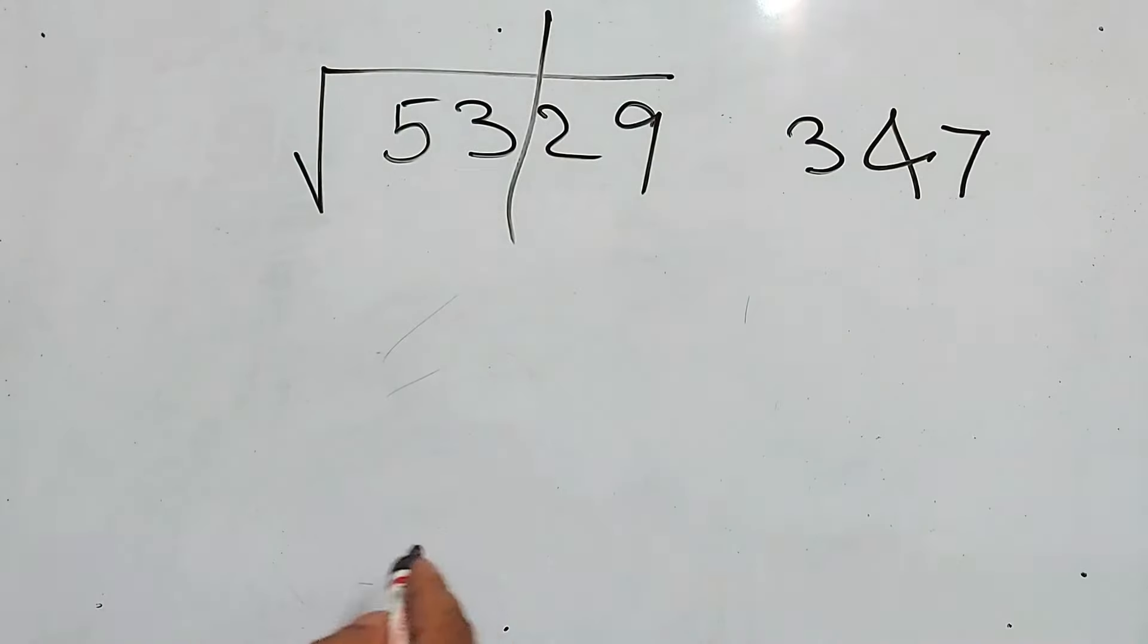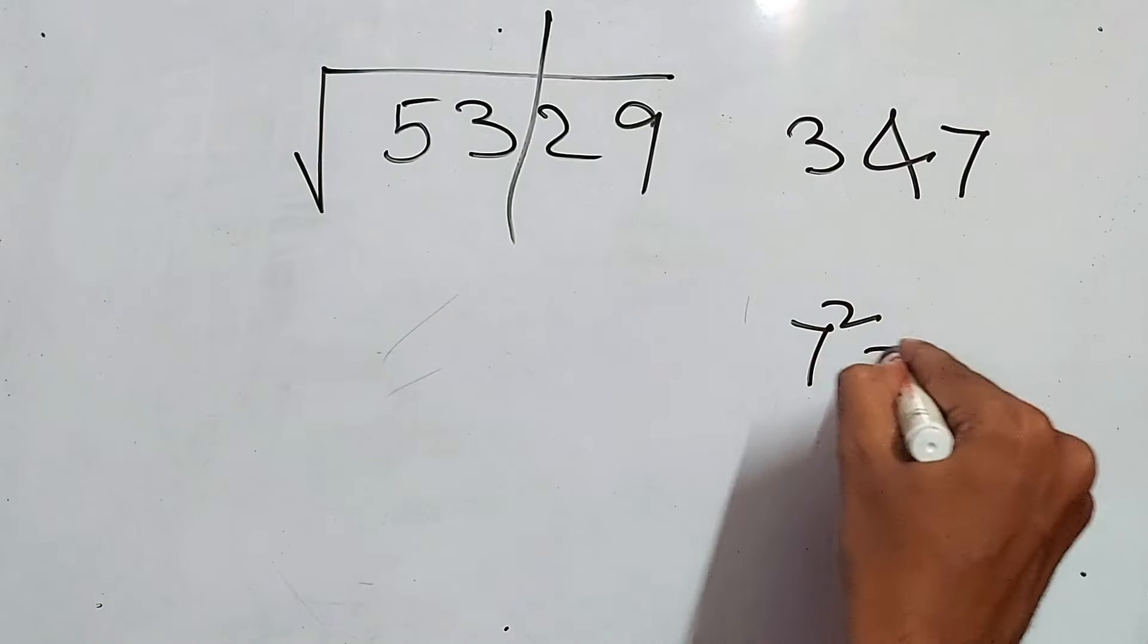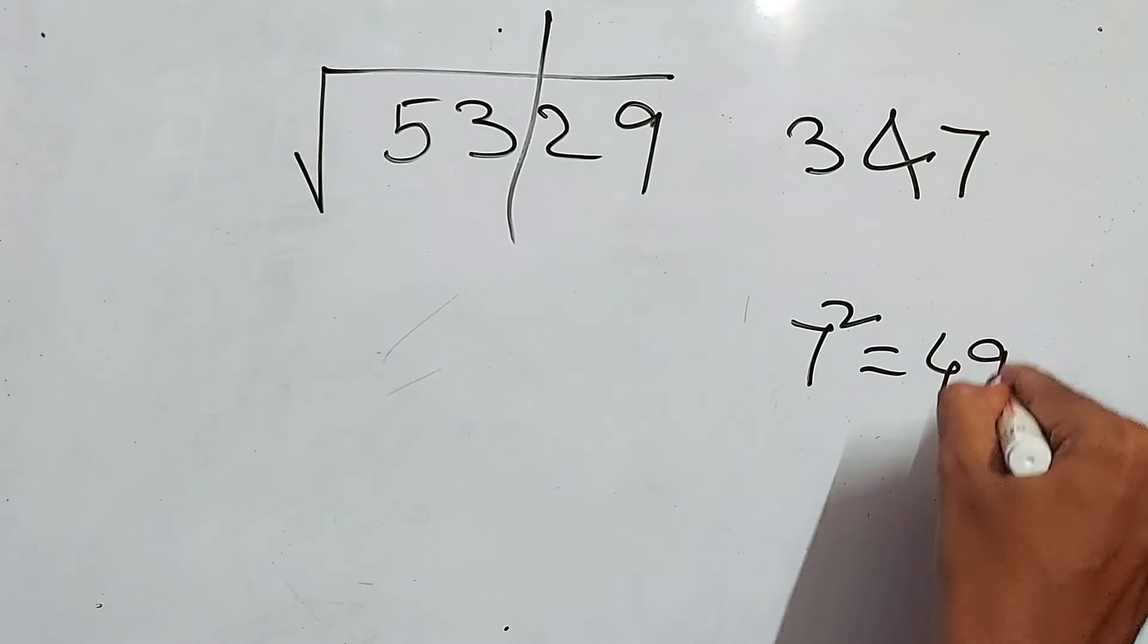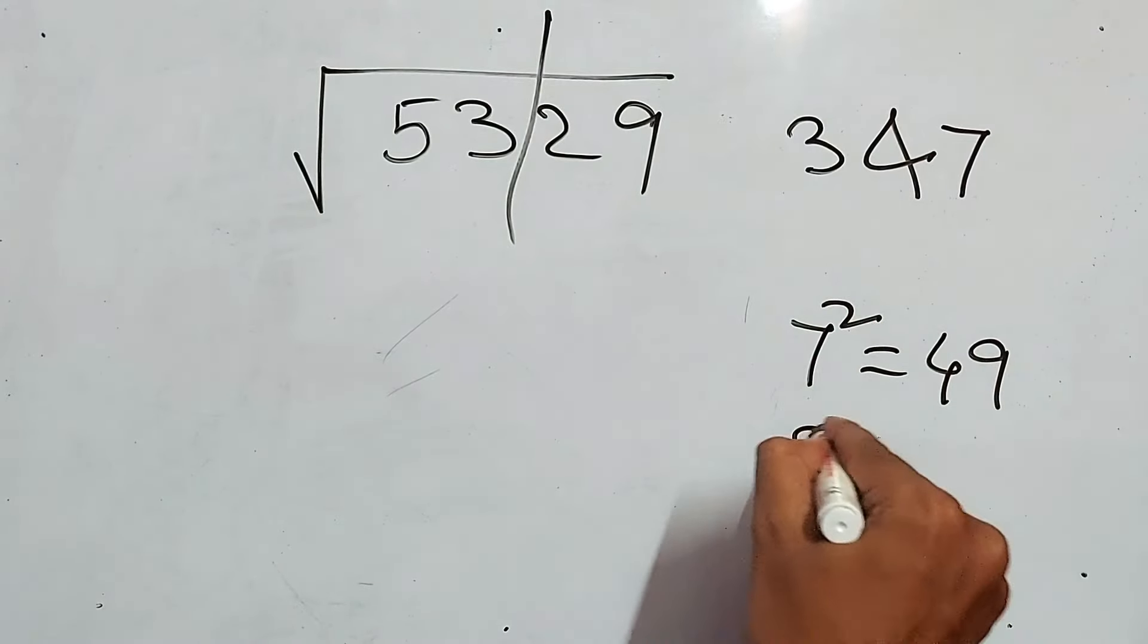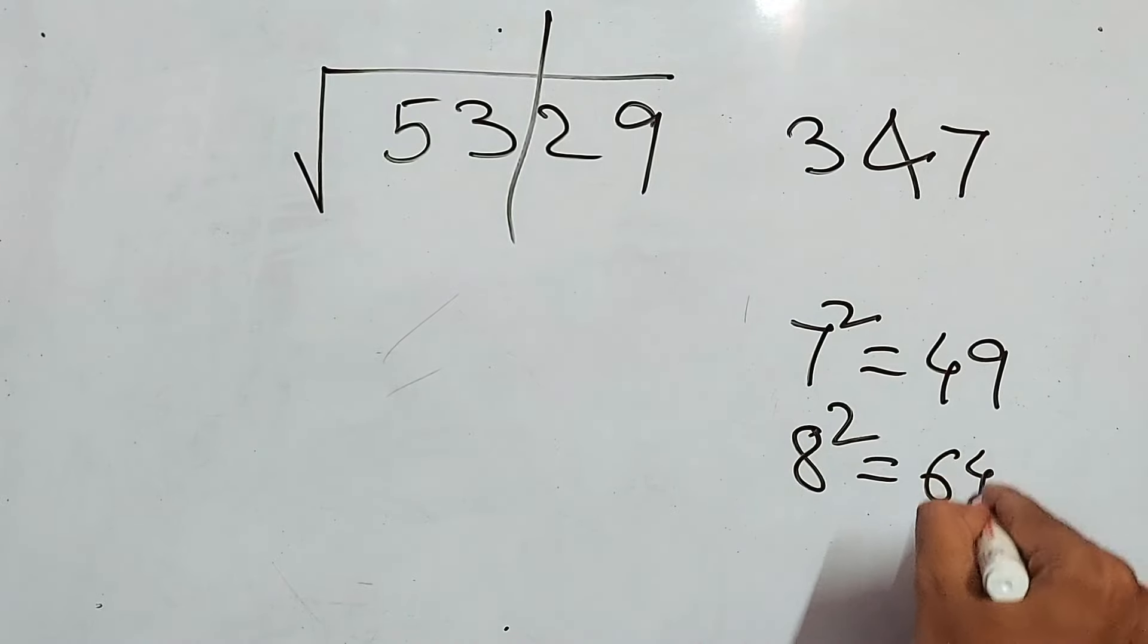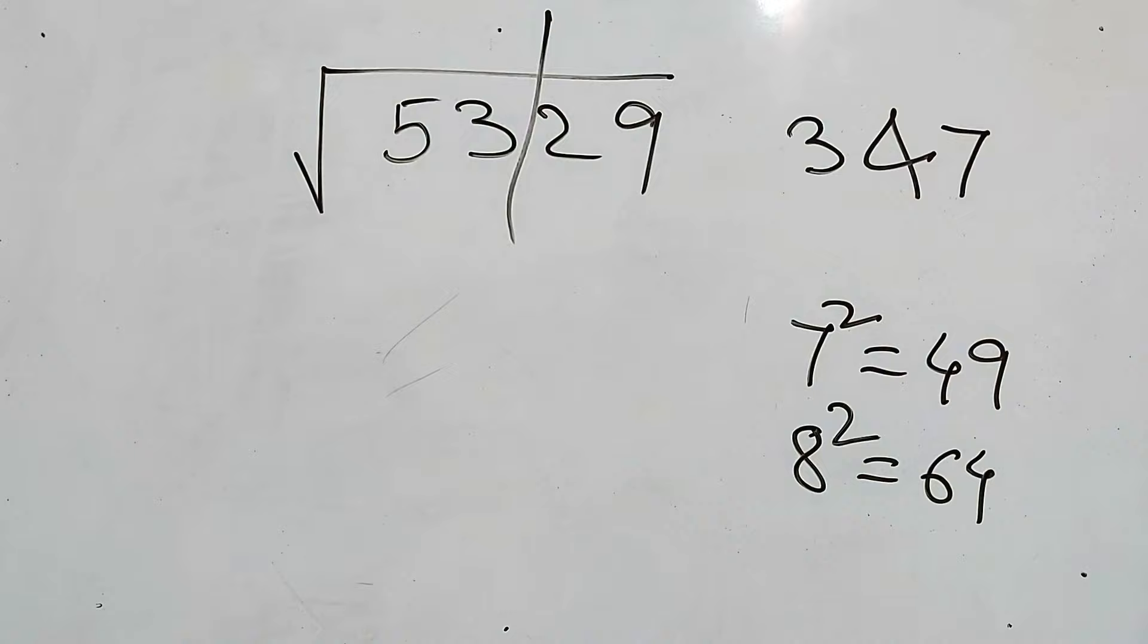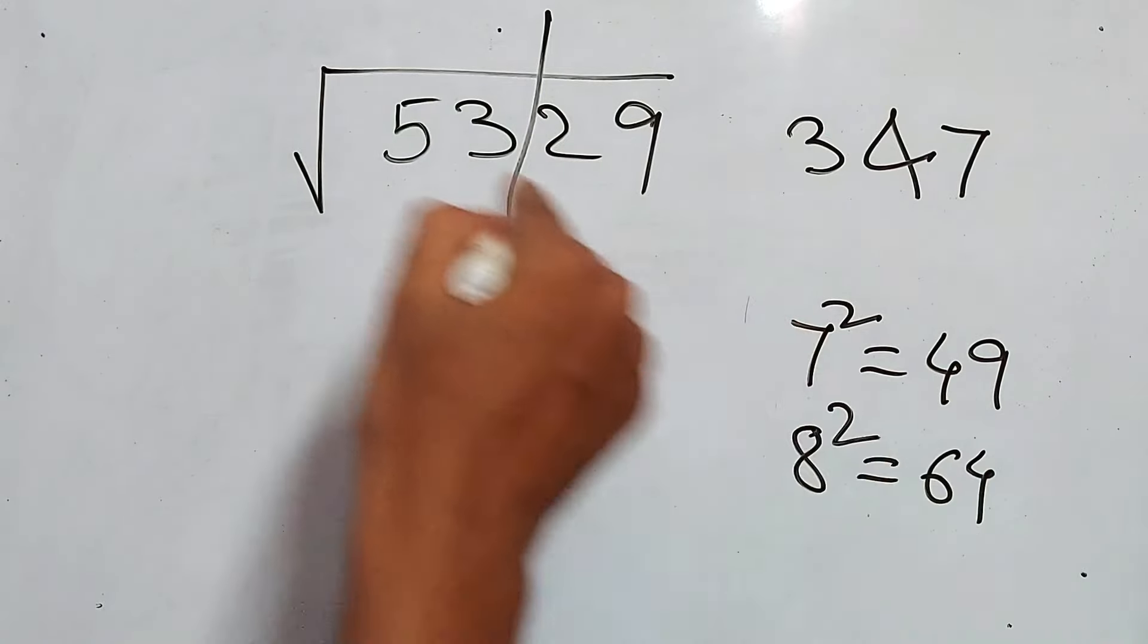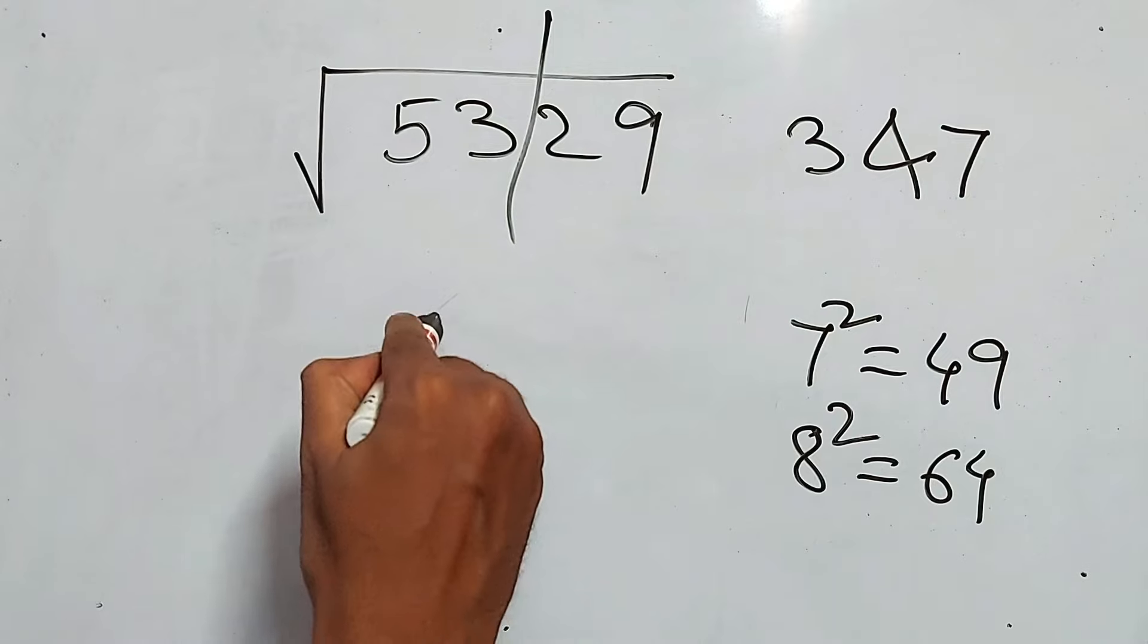7² is 49 and 8² is 64. Definitely in between these two. So always take the smaller one, that is 49. Definitely, the first number will be 7.